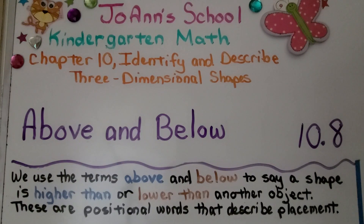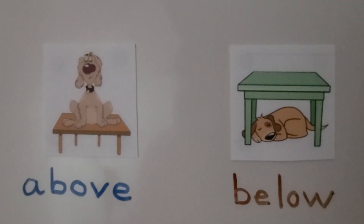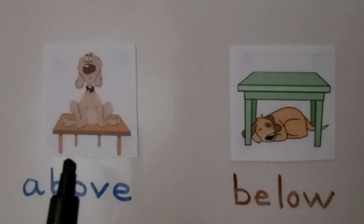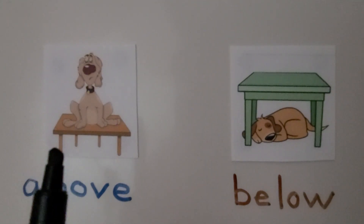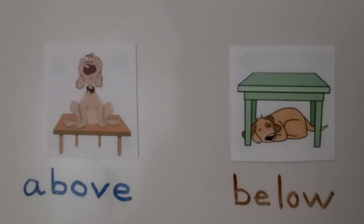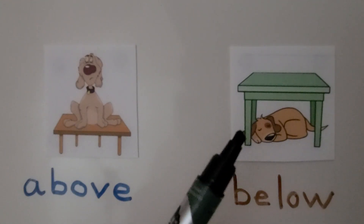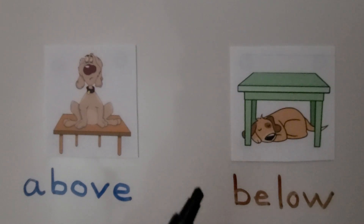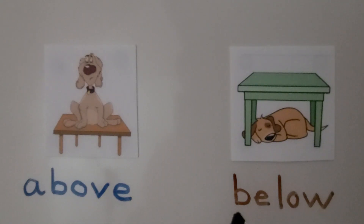Lesson 10.8: Above and Below. We use the terms 'above' and 'below' to say a shape is higher than or lower than another object. These are positional words that describe placement. In this picture, the dog is above the table — it's higher than the table. In this picture, the dog is below the table — it's lower than the table. Do you notice that the word 'below' has the word 'low' in it?